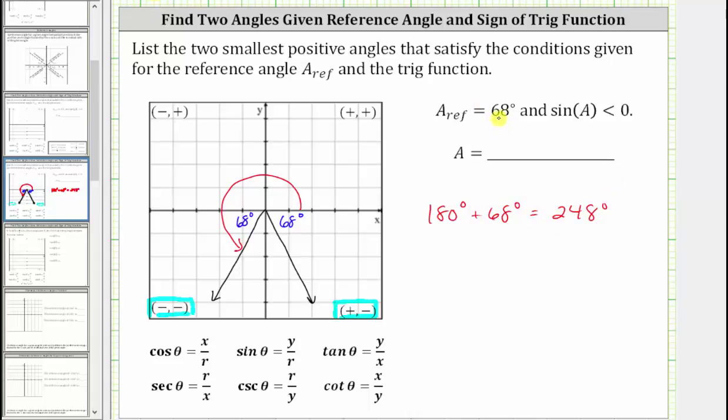248 degrees is the smallest positive angle that satisfies the given conditions.